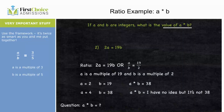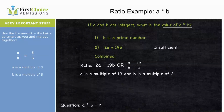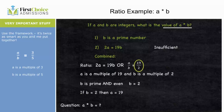Combining both statements: a is a multiple of 19, b is a multiple of 2, and b is prime. The only number that is both prime and a multiple of 2 is 2 itself. So b must equal 2, which means a must equal 19 to maintain the 19-to-2 ratio. We know the exact value of a times b. Answer is C.